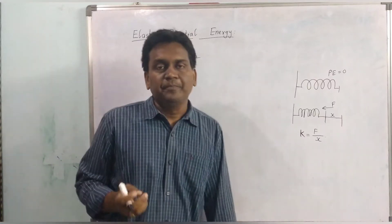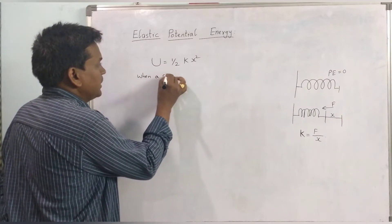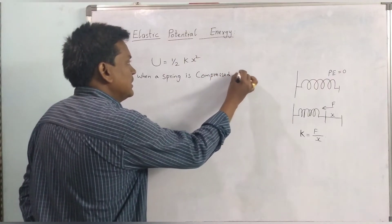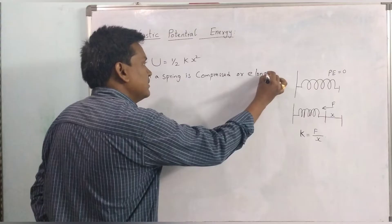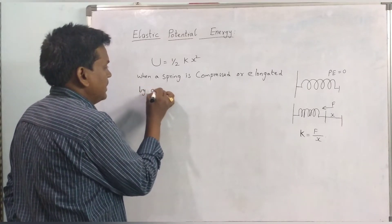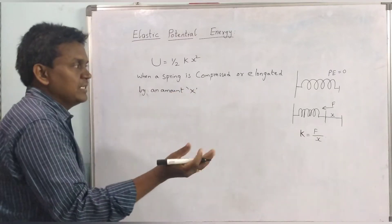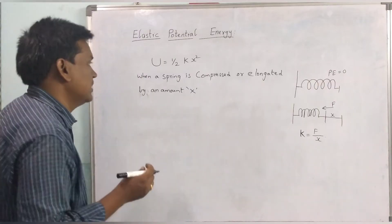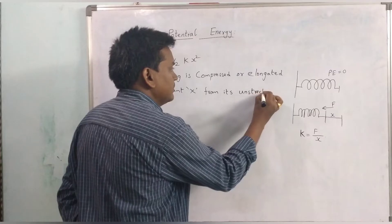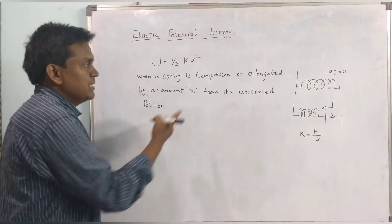We can define elastic potential energy like this: when a spring is compressed or elongated by an amount of x — x is nothing but the displacement made by the spring by applying some force, from its unstretched position.